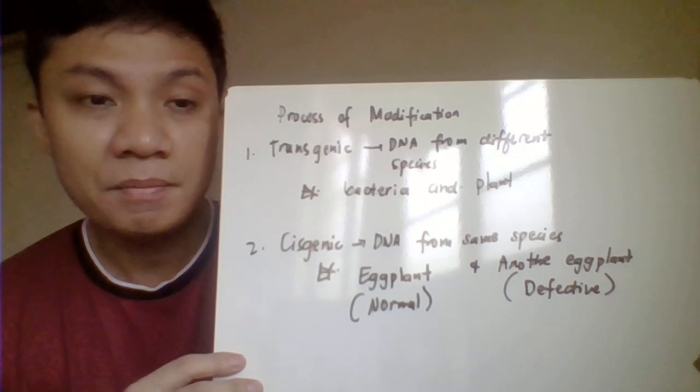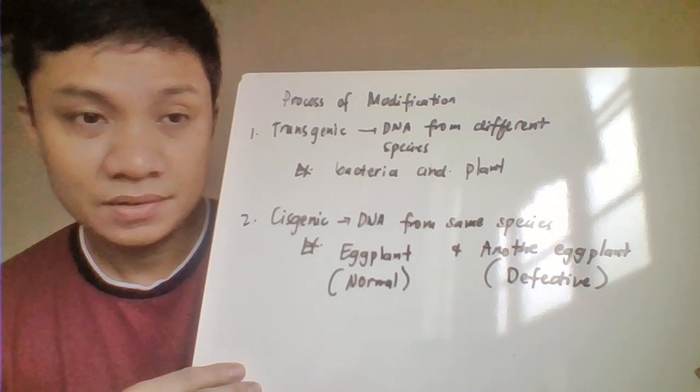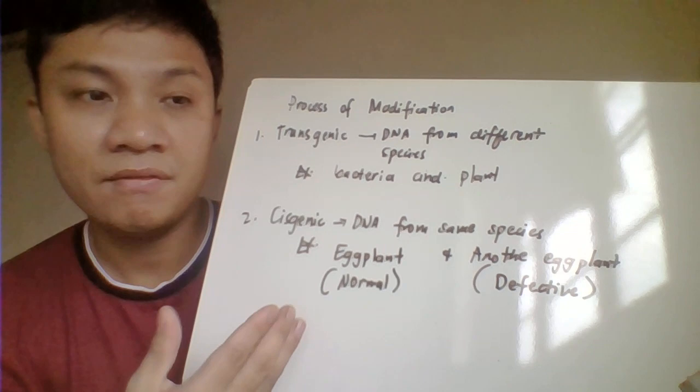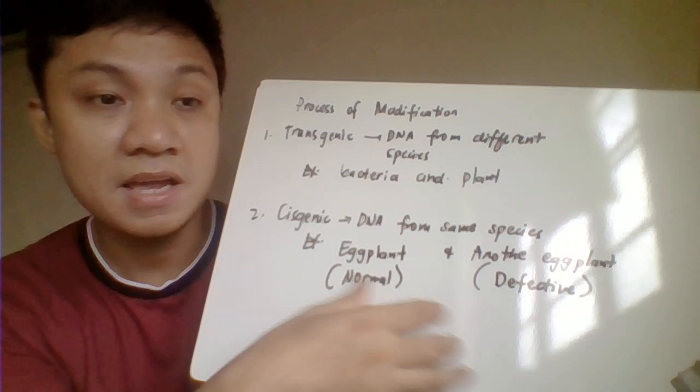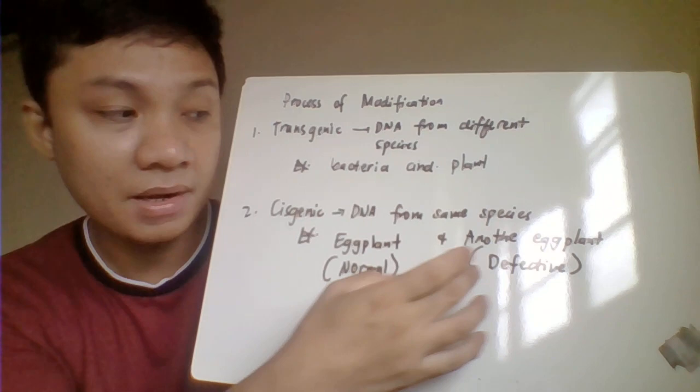In cisgenic recombination, they belong to the same species. It's because the host organism possesses lacking or defective characteristics, while the donor has a more perfect variety. You can get genes from that donor and transfer them to another variety of the same species in order for the host to acquire those characteristics and become a better version of the species.